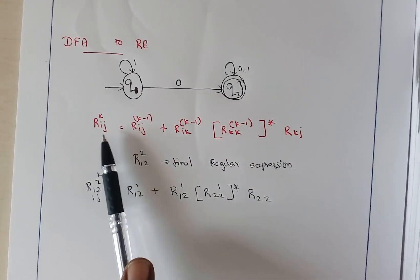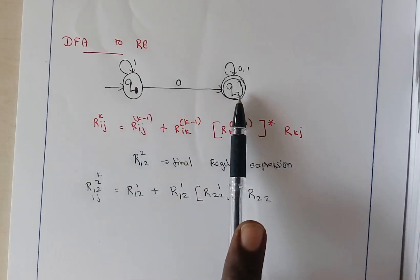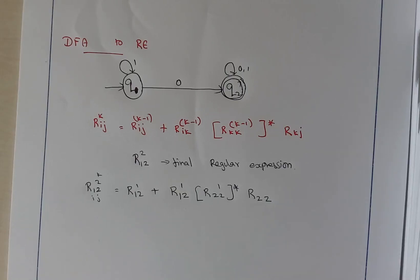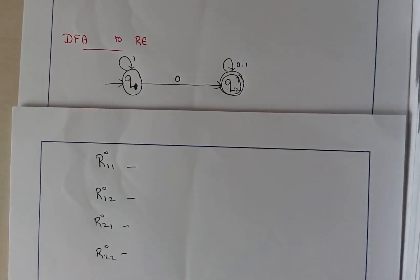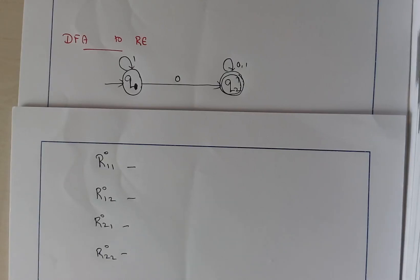We will find all possible transitions: R11, R12, R21, and R22 — these are all possible combinations of i and j values. I may take either 1 or 2, and j may also take either 1 or 2. We are going to look at all possible combinations of transitions with 0 as the intermediate node. R represents a regular expression, 1 and 2 represent the node conditions, and 0 represents the 0 intermediate node — that is, all direct transitions.